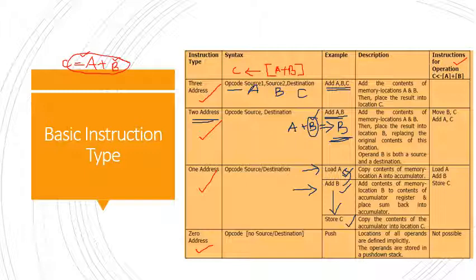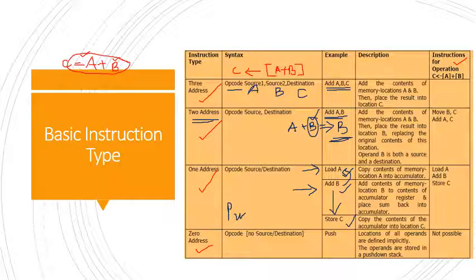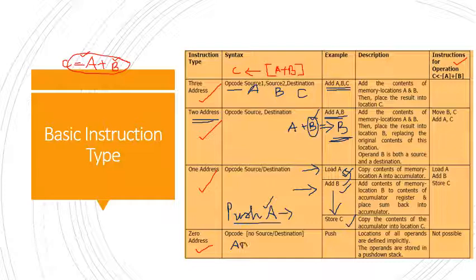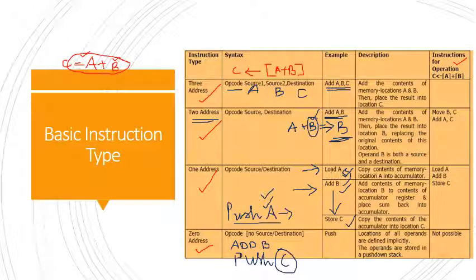For zero-address instructions, the location of operands are defined implicitly — operands are stored in a pushdown stack. PUSH A pushes the content of A to the stack, then PUSH B pushes B, then ADD performs the addition, and POP C stores the result to location C. This is the zero-address approach.